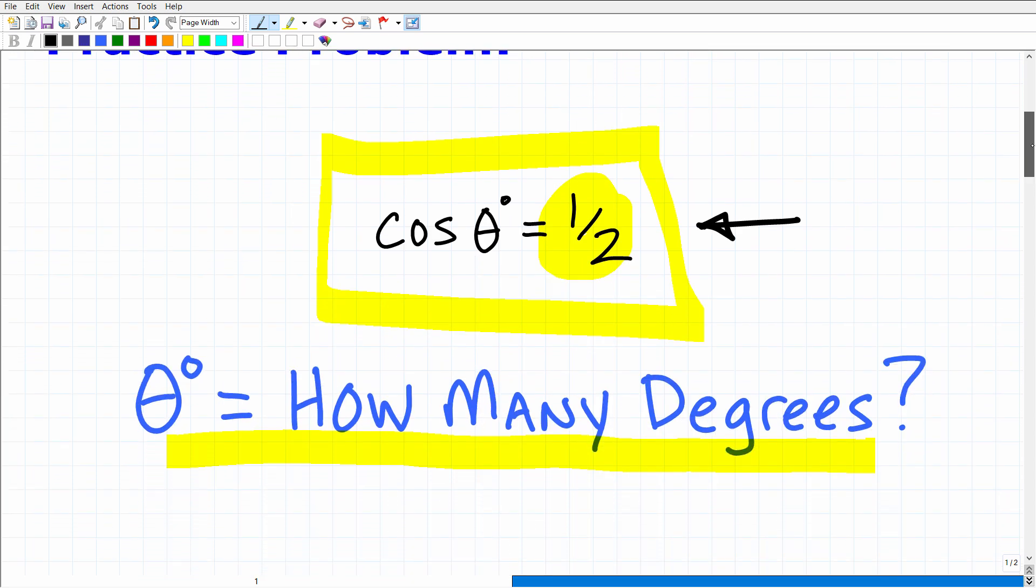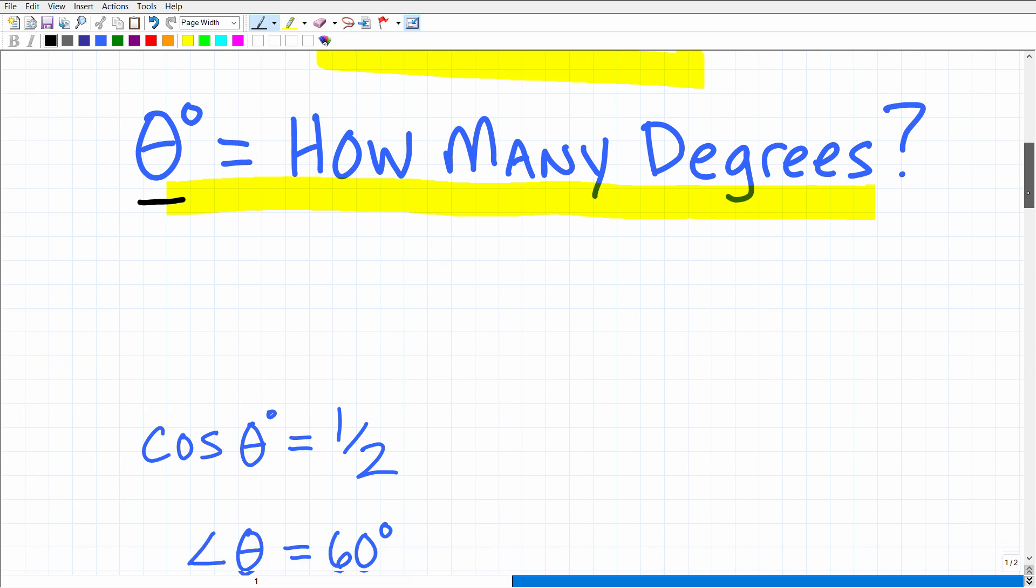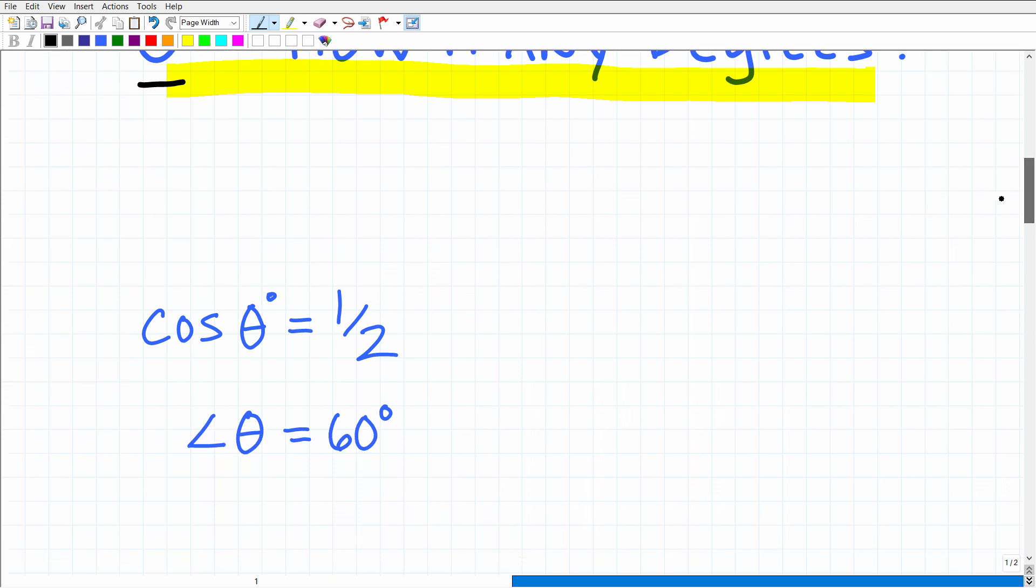So the cosine of some angle, some angle theta, is equal to 1 half. What is this angle? Well, here is the answer. The cosine theta is equal to 1 half. Of course, that was the question. The angle is 60 degrees. All right, so hopefully you got this correct. And if you did get this right, that's obviously very good. But again, that's only one piece of what you're going to need to know for this particular Praxis.